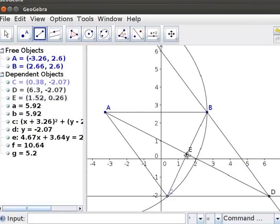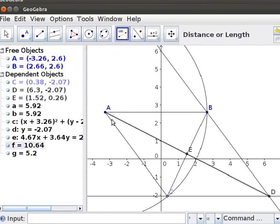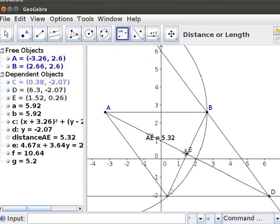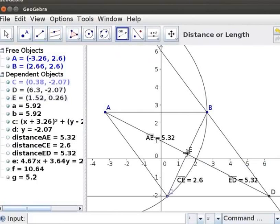Using the Distance Tool, let us check whether the Diagonals bisect each other. Under the Angle Tool, click on the Distance or Length Tool. Click on the Points A, E, E, D, C, E, E, B.